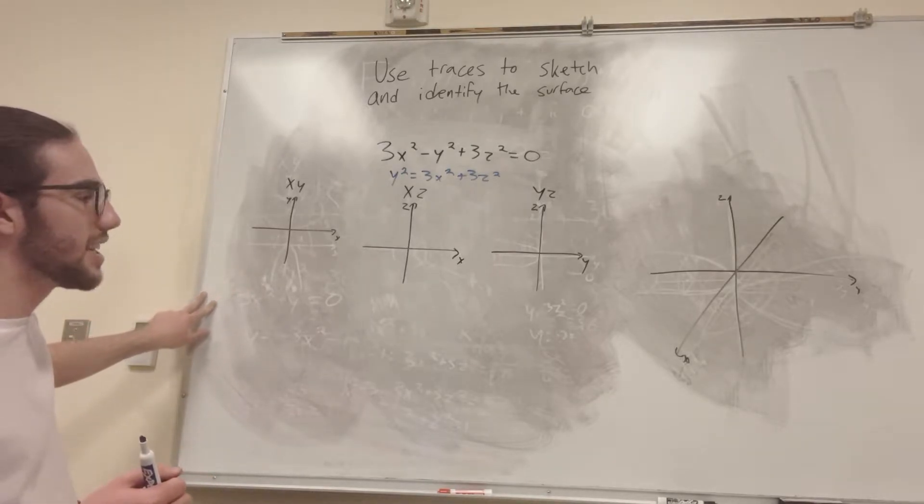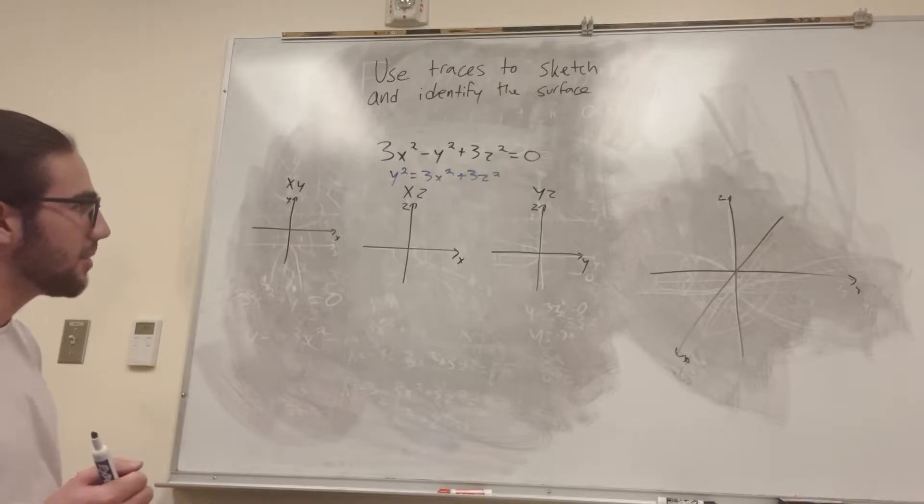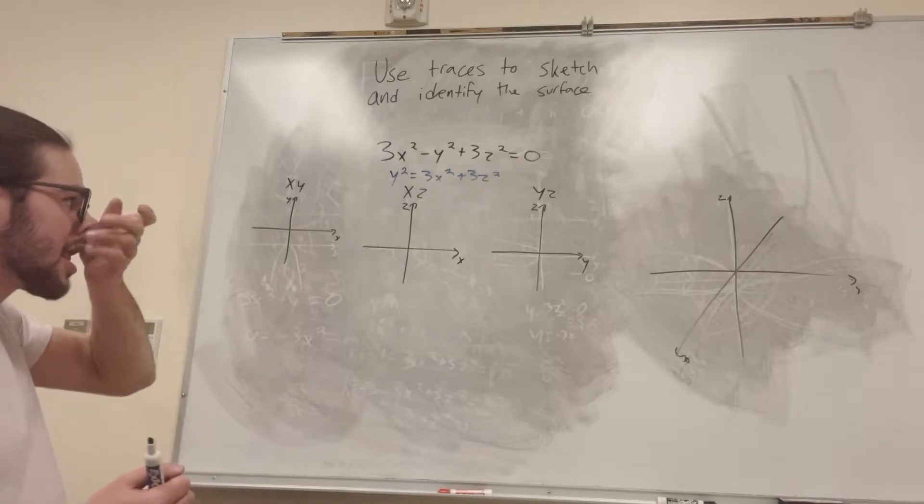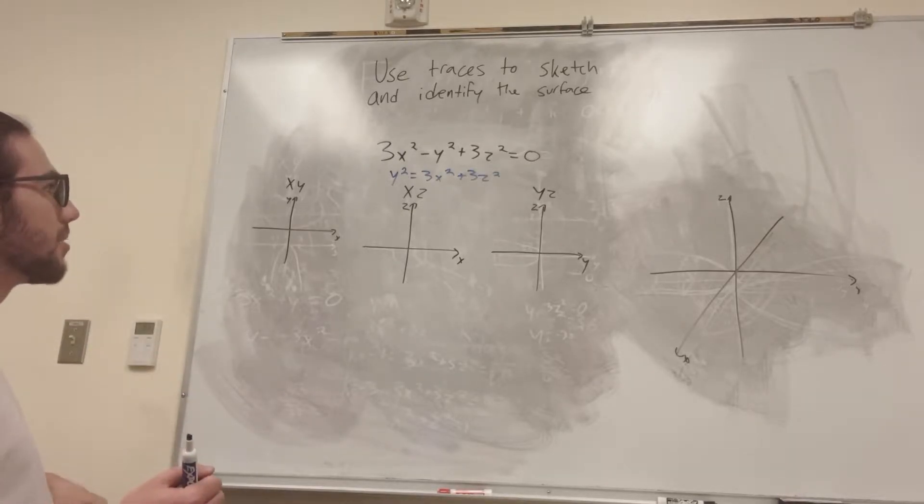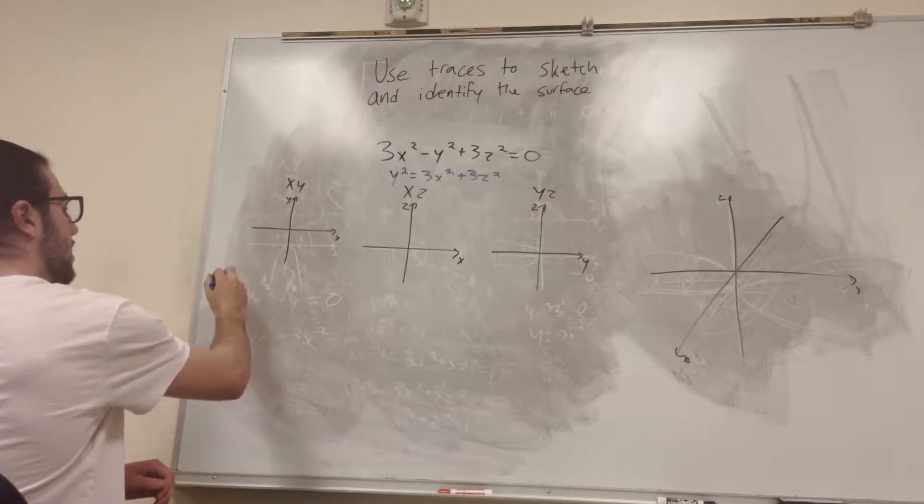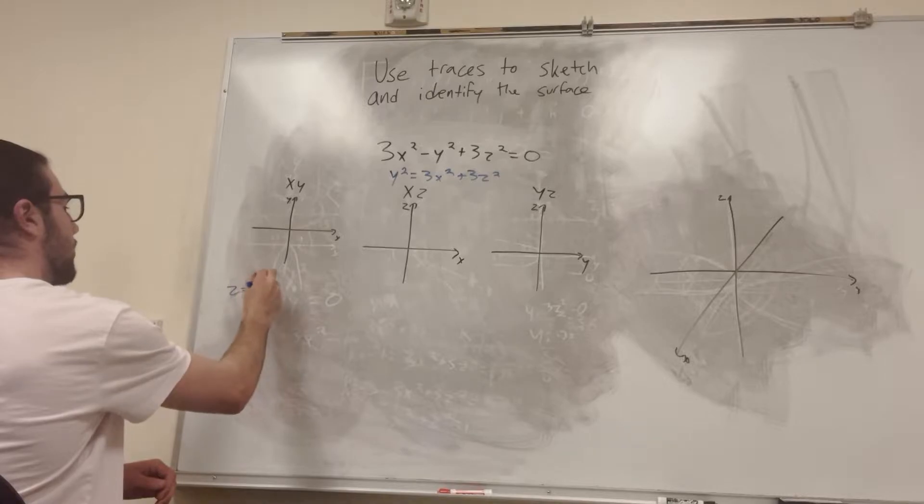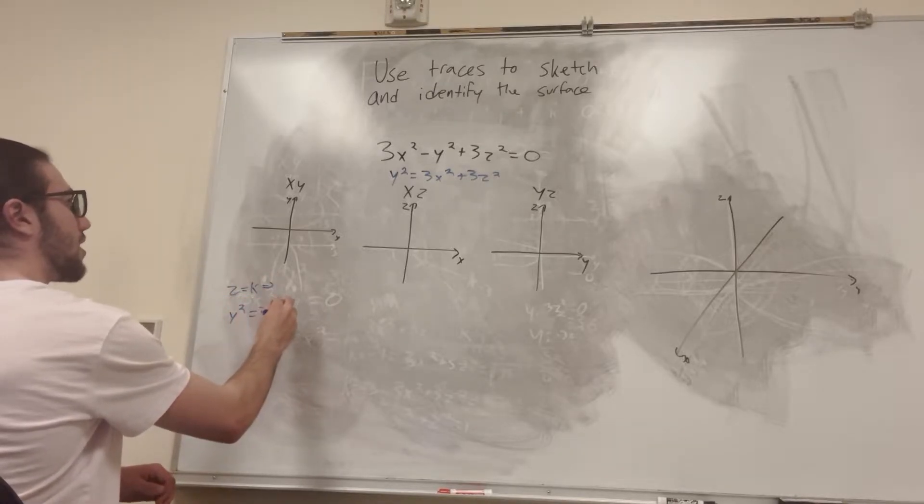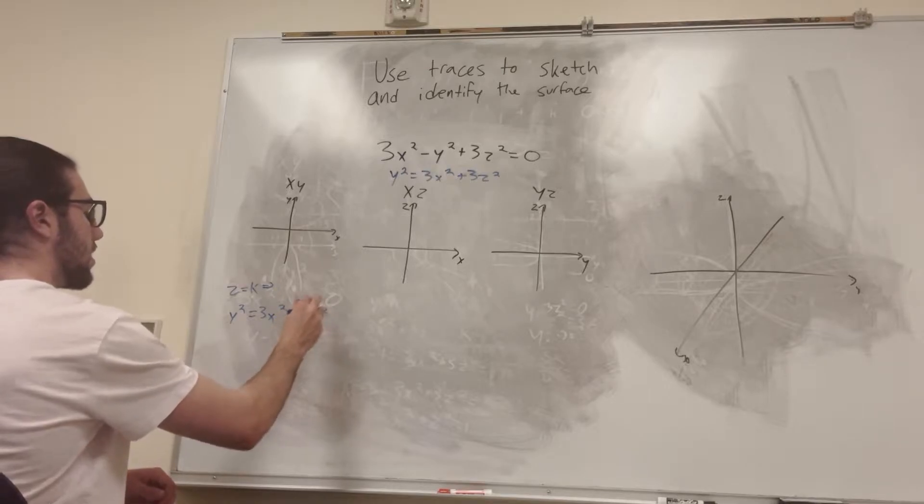So we can go ahead and just say that z is equal to zero. And now, actually, what you can do is you can set z is equal to a constant, and you can figure out some things, which is actually what we're going to do instead. So let's just say z is equal to k. So therefore, we have that y squared is equal to 3x squared plus 3k squared.